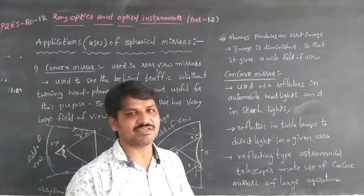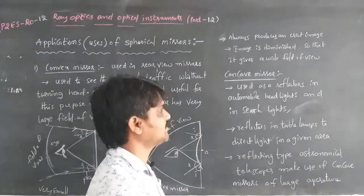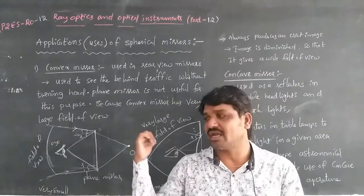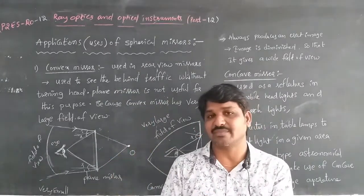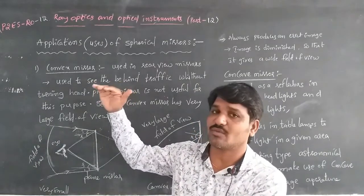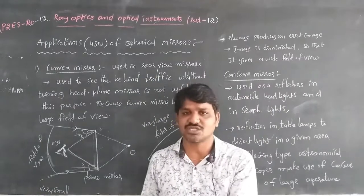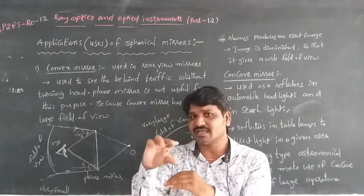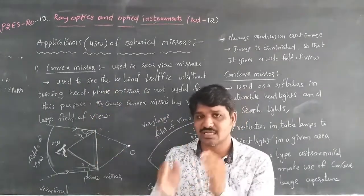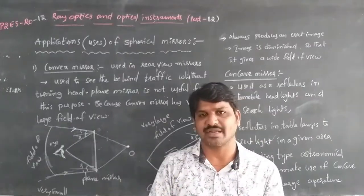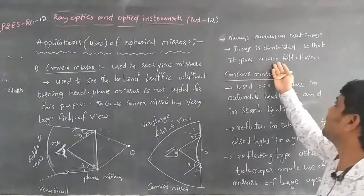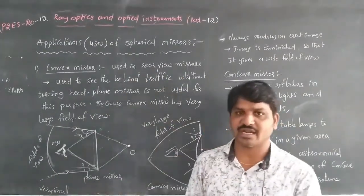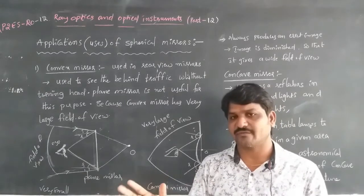Another reason convex mirrors are used in the rear-view of automobiles is that they form a diminished image. If large automobiles such as lorries or buses are coming behind us, we can see them fully in the side mirror because the image is diminished — the size of the image is much smaller than the actual object. This is how convex mirrors provide a wide field of view in rear-view and side mirrors of automobiles.